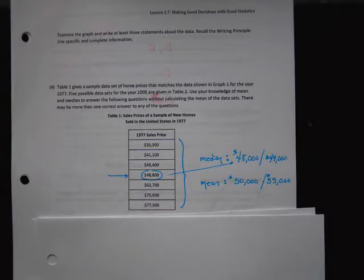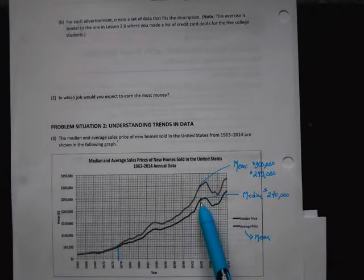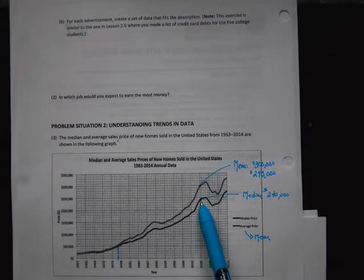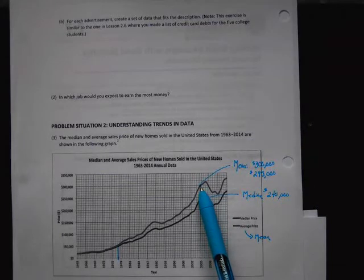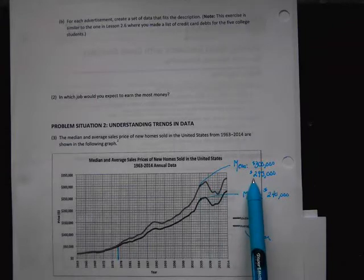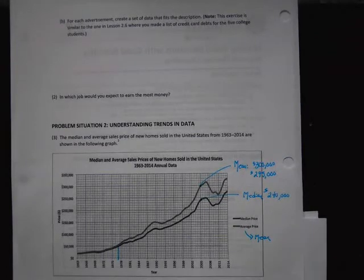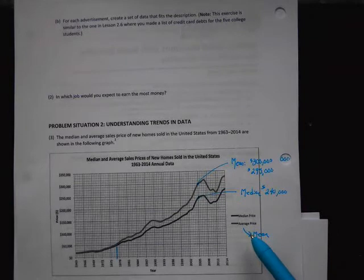Hopefully you took some time and looked at your graph. When I looked up 2005, the median — the darker bar — was just a little bit lower than the $250,000 marker, so I said the median was $240,000. For the mean, it looked like it fell right on a tick mark or maybe slightly lower, so around $295,000 to $300,000. If your answers were somewhere around those, you read the graph really well.